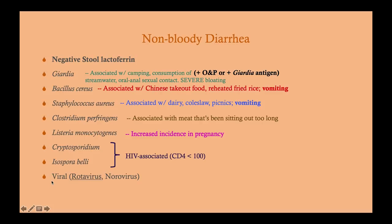The viral causes — rotavirus and norovirus — are the most common causes of non-bloody diarrhea. Rotavirus is probably the most common overall; norovirus tends to show up in outbreaks like on cruise ships. With cryptosporidium and Isospora, you can also get an acid-fast test or ova and parasites — both will show up positive. Acid-fast testing wouldn't be part of your general stool workup, but if you have an AIDS patient, you may want to add that in.